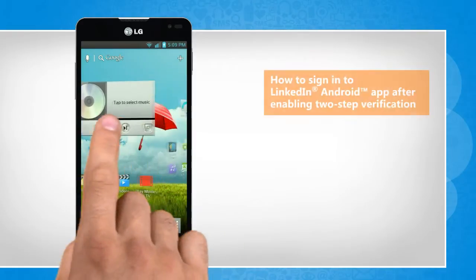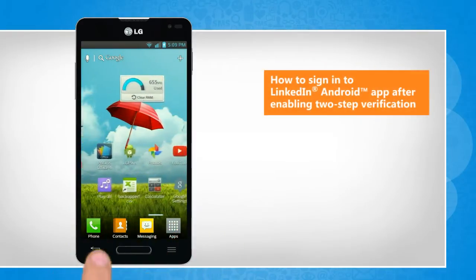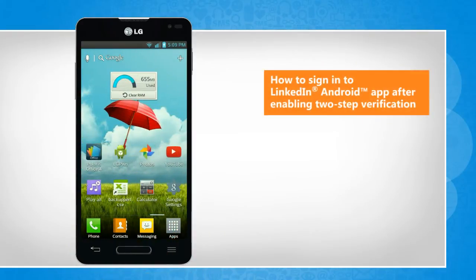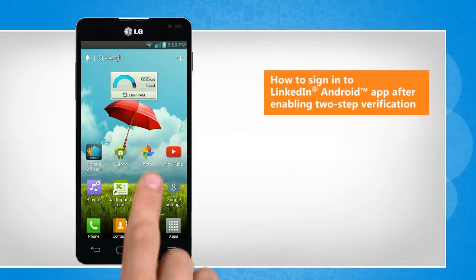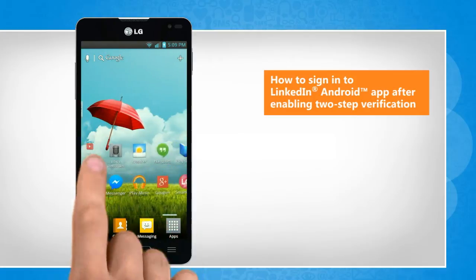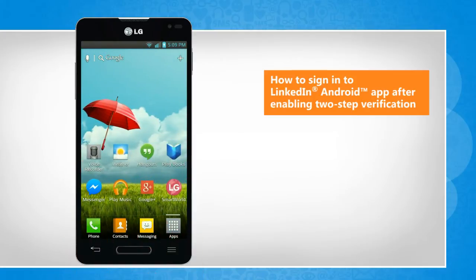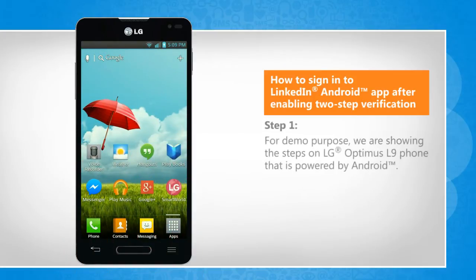Hi friends! To secure your LinkedIn account from unauthorized access, there is a two-step verification process. Let's go ahead and see how you can sign in to your LinkedIn account by using this two-step verification process. For demo purpose, we are showing the steps on LG Optimus L9 phone that is powered by Android.